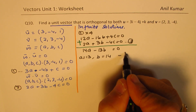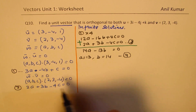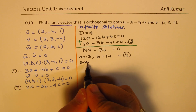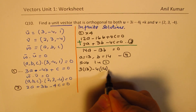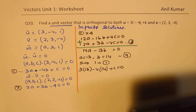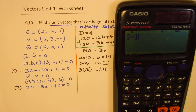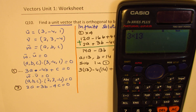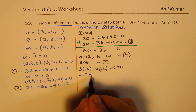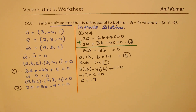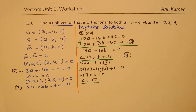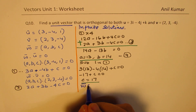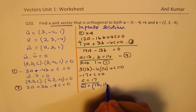We substitute a=13 and b=14 into equation 1: 3(13) - 4(14) + c = 0, so 39 - 56 + c = 0, giving -17 + c = 0, so c = 17. We have values for a, b, and c. Therefore the vector perpendicular to both is w = (13, 14, 17). However, that is the vector, not the unit vector.